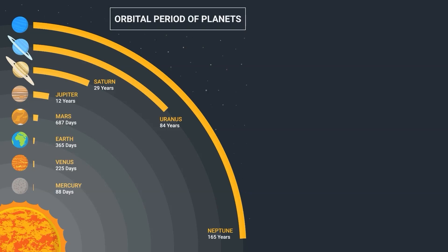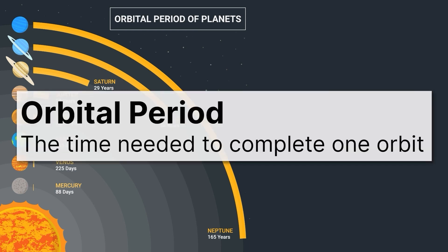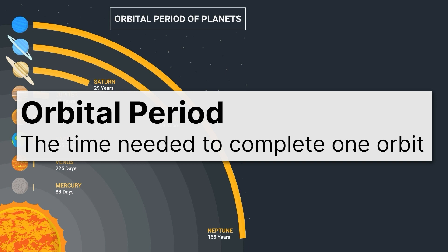Take a look at these different orbital periods of the planets in our solar system. First of all, if you want to know what this means, we need to understand what an orbital period is. Well, an orbital period is the time needed to complete one orbit. And you should know we're going to represent that with a T. So it is represented with a capital T.